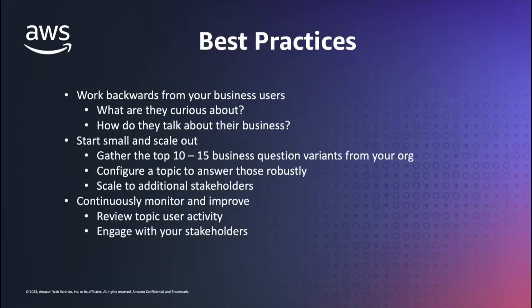So let's talk about some best practices before we dive into the product demo. This doesn't just apply to named entities — it applies to all the things you can do with Q topics. Really, this is a matter of working backwards from your business users. What are they curious about and how do they talk about those things? What are the words that they use? Where are they using shorthand to refer to complex concepts about their business? And where does their language diverge from the field names and values that might exist in the physical data? How can you create that translation layer between the datasets you're familiar with and the ways that your business users are used to asking questions about the data?